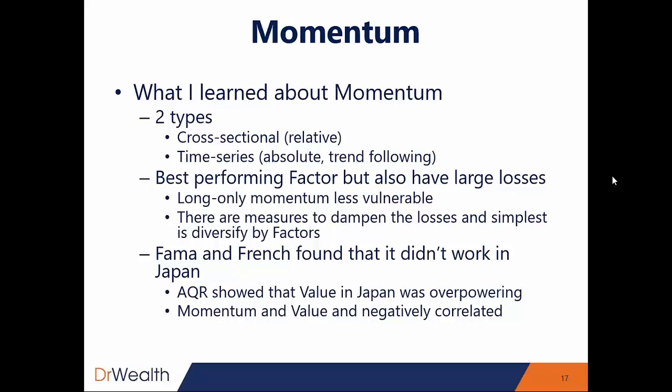One mitigating measure to dampen the losses is to use multiple factors. Instead of putting everything into momentum — even though it's the best performing factor — there are good reasons to diversify. Putting some money in value and some in size will make your portfolio more resilient. There are also other mitigation strategies mentioned in the book if you want to learn more.